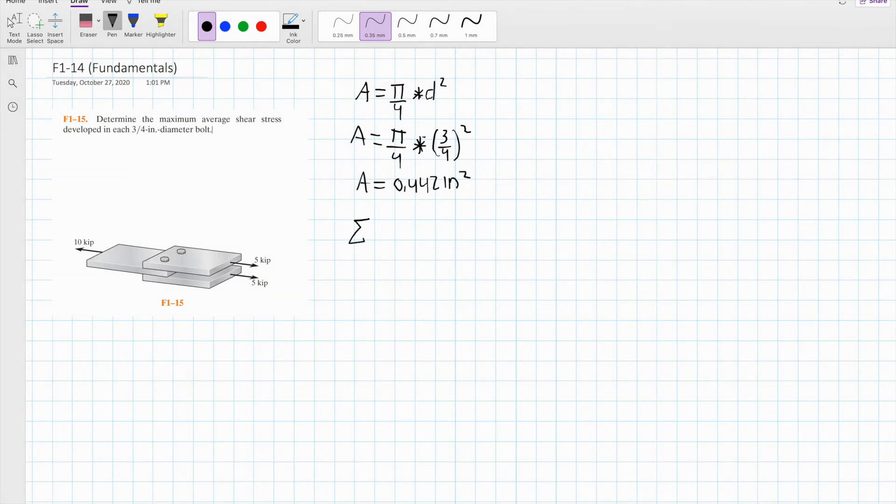Now we sum all the forces in the x direction and equate them to 0. In this case the shear forces are applied where the bolts are located. We see one shear force applied here, another here, the third one in the bottom and the fourth one on the other right side. So we have a total of 4.